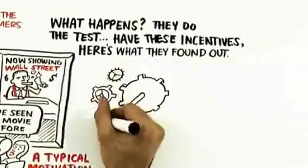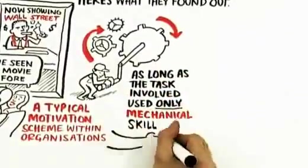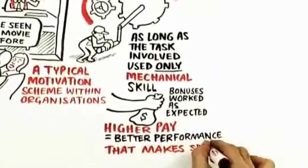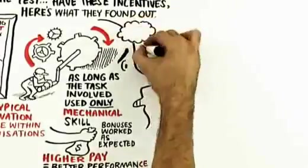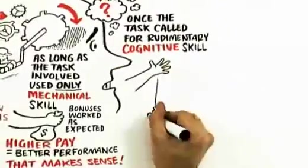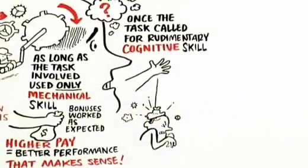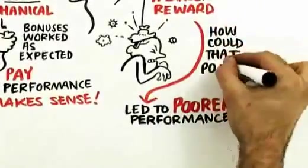As long as the task involved only mechanical skill, bonuses worked as they would be expected. The higher the pay, the better their performance. That makes sense. But here's what happens. But once the task called for even rudimentary cognitive skill, a larger reward led to poorer performance. Now this is strange, right? A larger reward led to poorer performance. How can that possibly be?